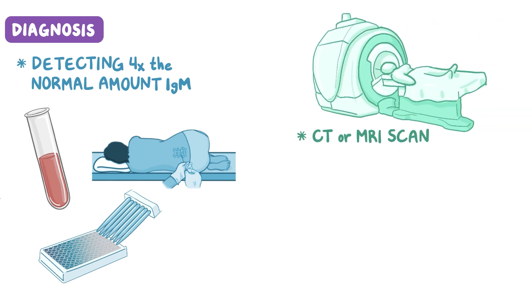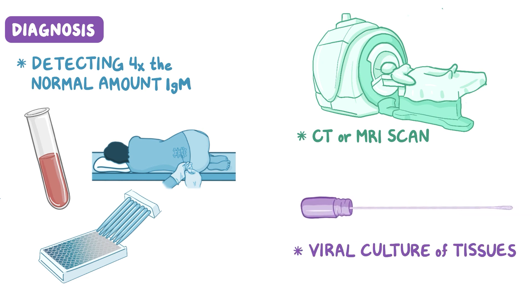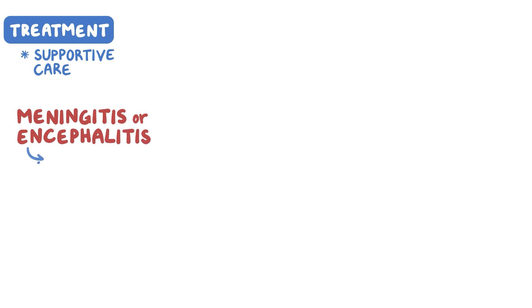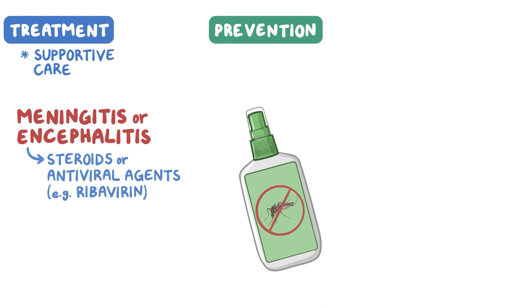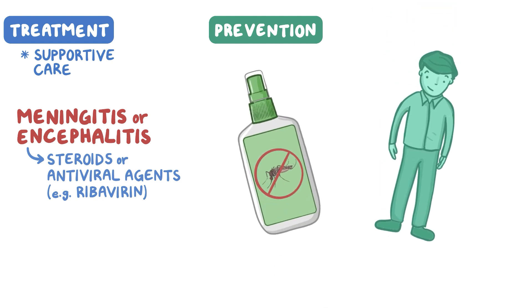A CT or MRI scan generates detailed cross-sectional images of the brain that can help rule out other possible neurological diseases. In more severe cases, viral culture of tissues can also be helpful. Treatment for West Nile virus includes supportive care. If meningitis or encephalitis develops, steroids or other antiviral agents like ribavirin are considered, but only administered on a case-by-case basis. Prevention of West Nile virus remains the best therapy, using mosquito repellent and wearing long-sleeved shirts and pants.